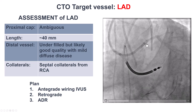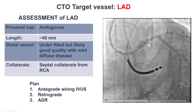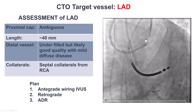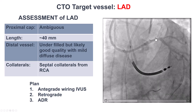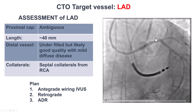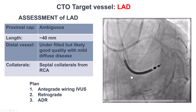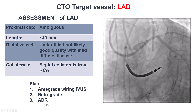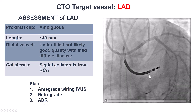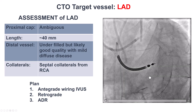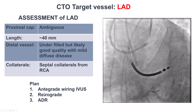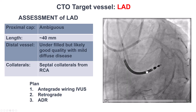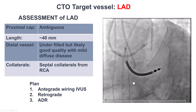The plan was to start with antegrade wiring, using IVUS to resolve the proximal cap ambiguity. If it didn't work, go retrograde from the right coronary artery. And if that didn't work, try antegrade dissection re-entry. This was the least favored approach, given the previous stents into the LAD.